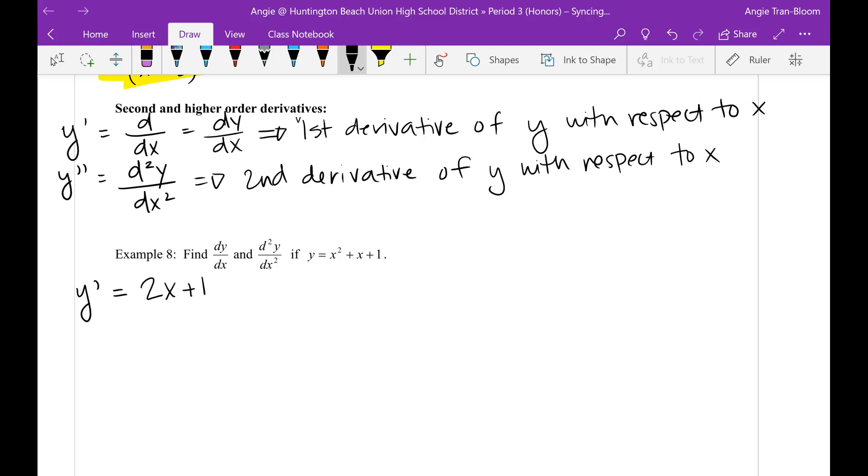This is 2x plus 1, and the second derivative, let's do y prime prime, which is 2. I know, it's that easy. All right, and guess what? That's how you take first and second derivative of a polynomial. Until next time, guys.